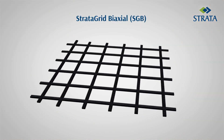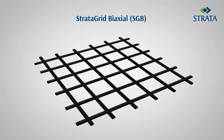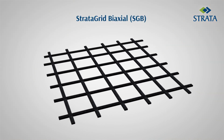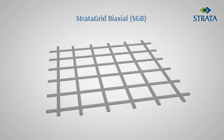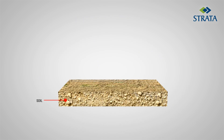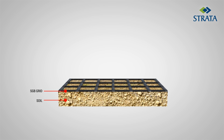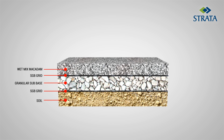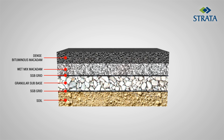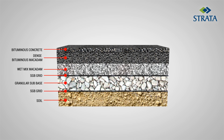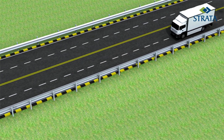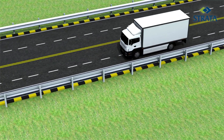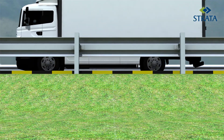Stratagrid SGB grids are high performance biaxial geogrids used for pavement reinforcement and strengthening. Biaxial geogrids have strength in both directions with high stress and strain values and superior interaction with the granular pavement layers. They can be placed in the WMM or GSB layer, or both, depending on the design requirements. The SGB geogrids generate a very high interaction friction within the granular layer.